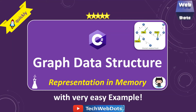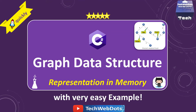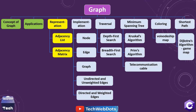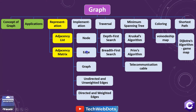Hello everyone, welcome to TechWeb Dots. Today I am going to discuss a very important point in graph data structure: representation in memory. In our agenda, I am going to discuss the representation including how it looks like in terms of adjacency list and adjacency matrix. In our next session I will show you the coding implementation — how we can create graphs with nodes, edges, and with undirected and unweighted graphs.